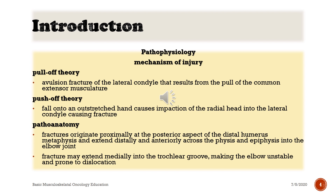Pathophysiology — Mechanism of Injury: Pull-off Theory: avulsion fracture of the lateral condyle results from the pull of the common extensor musculature. Push-off Theory: fall onto an outstretched hand causes impaction of the radial head into the lateral condyle, causing fracture. Patho Anatomy: fractures originate proximally at the posterior aspect of the distal humerus metaphysis and extend distally and anteriorly across the physis and epiphysis into the elbow joint. The fracture may extend medially into the trochlear groove, making the elbow unstable and prone to dislocation.